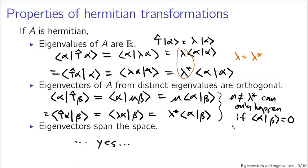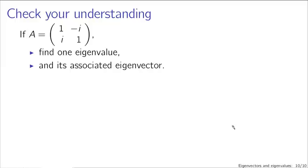This was a lightning-quick review of linear algebra. We will work with some of these concepts in more detail later. To check your understanding, here is another 2×2 Hermitian matrix — your task is to find an eigenvalue and its associated eigenvector. Since this matrix is also Hermitian, you know it will have two real eigenvalues with orthogonal eigenvectors, and you can check those properties as well. We'll be doing this sort of thing in the context of quantum mechanics, even with simple two-state systems involving 2×2 matrices.